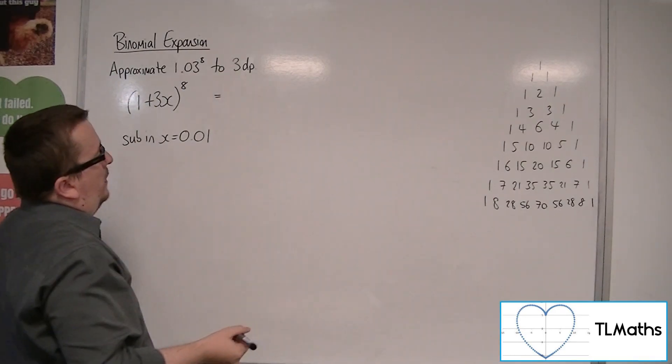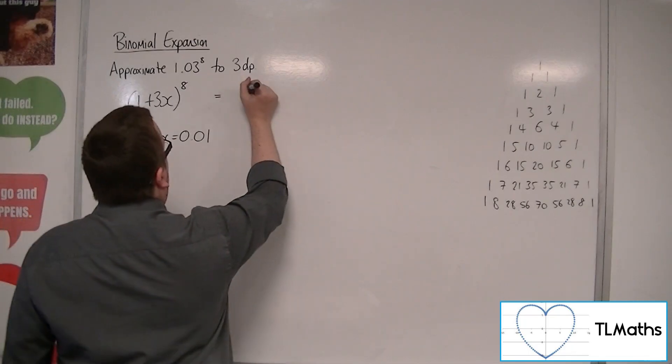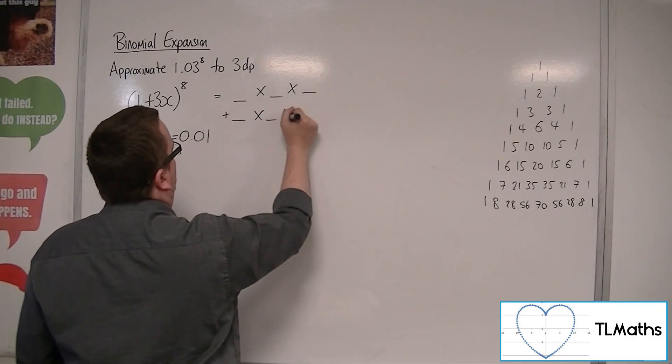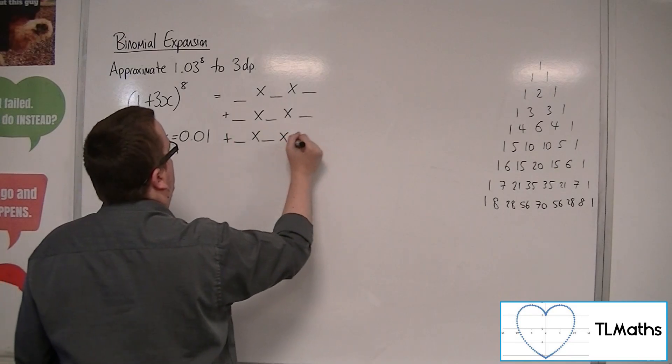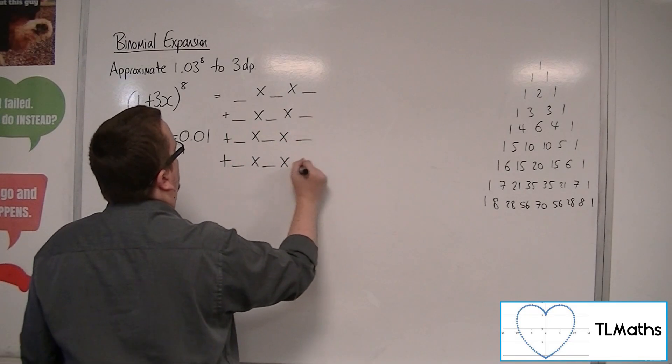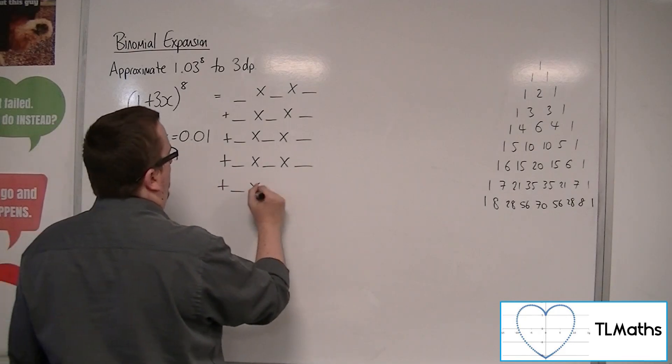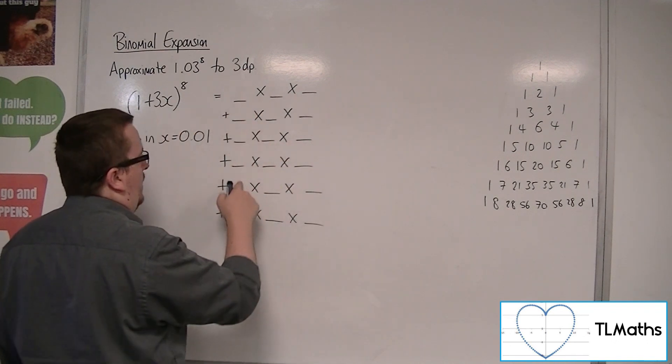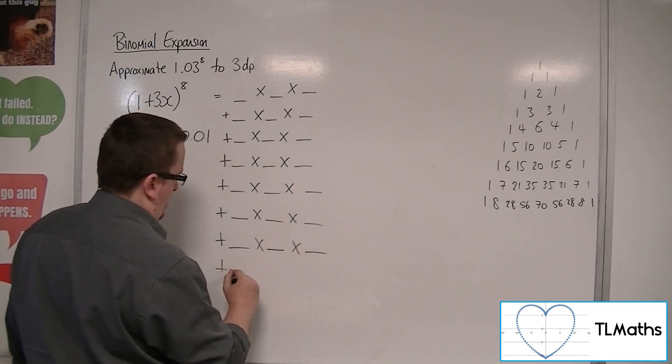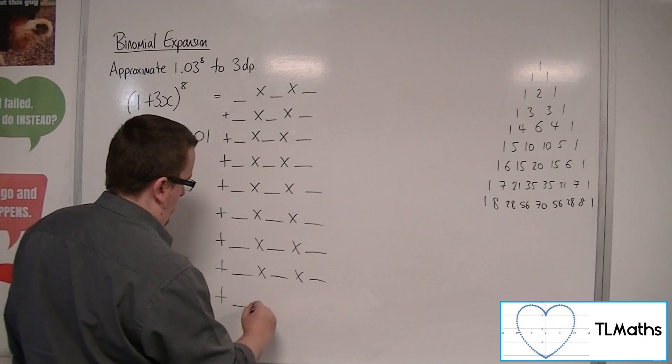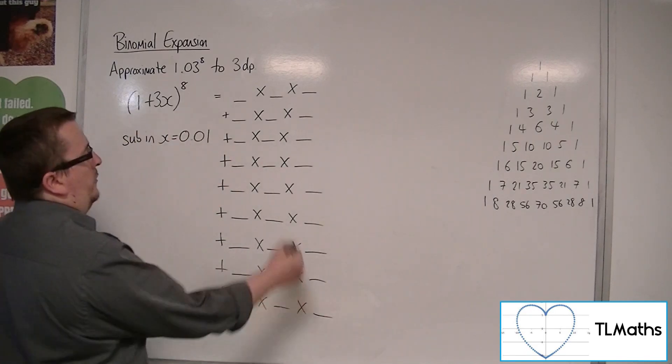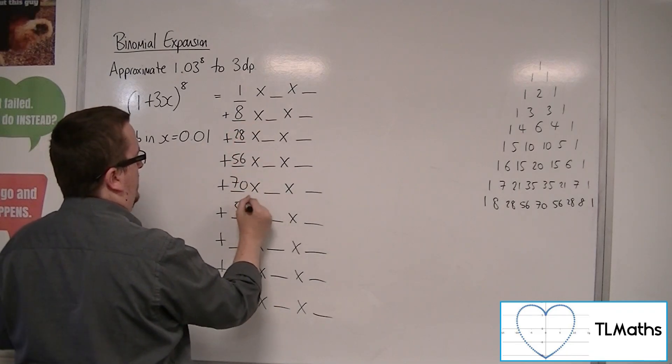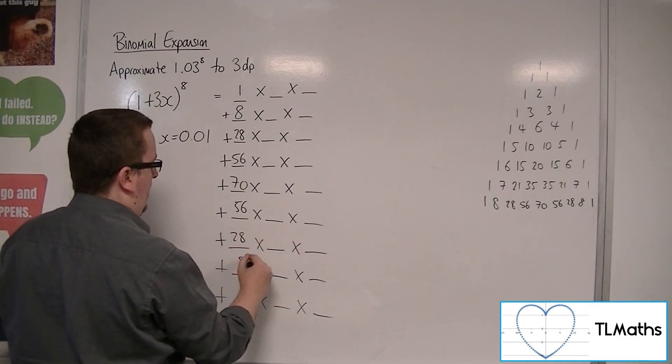Right, so this we know will be something times something times something. So we're going to have 9 of these. Now, we've also got to think of, well, how many am I actually going to need in order to get to 3 decimal places? And you'll see what I mean in a moment. 1, 2, 3, 4, 5, 6, 7, 8, 9. Okay, so we've got the 1, 8, 28, 56, 70, 56, 28, 8 and 1.